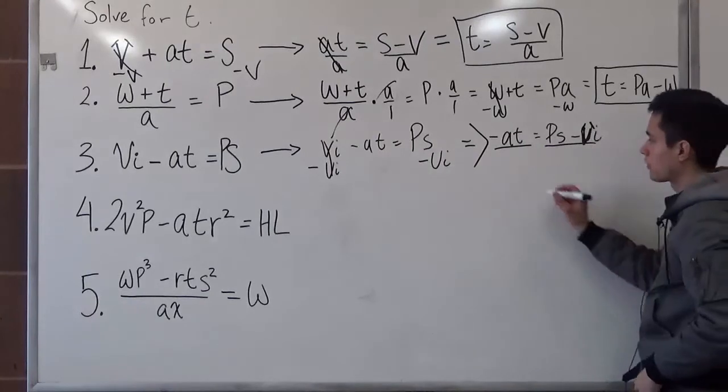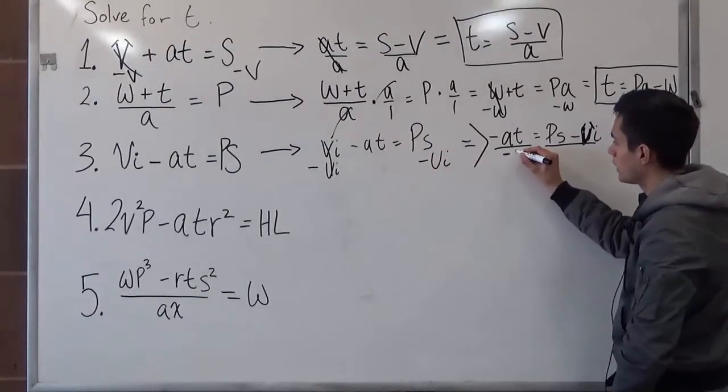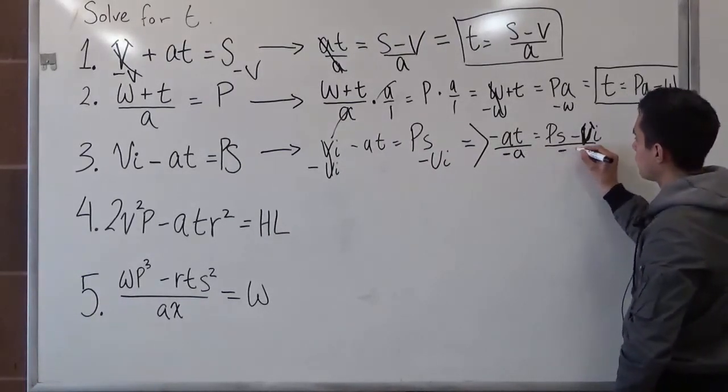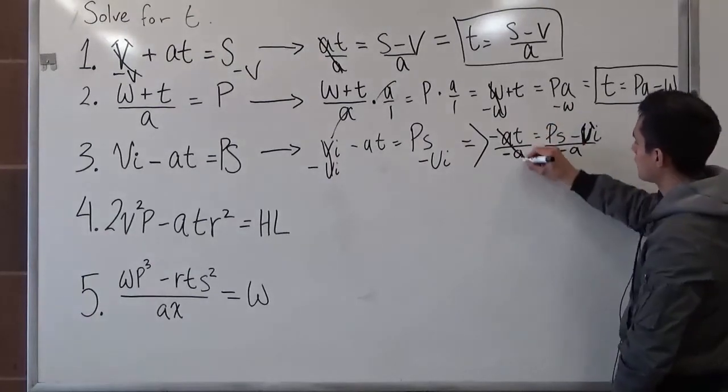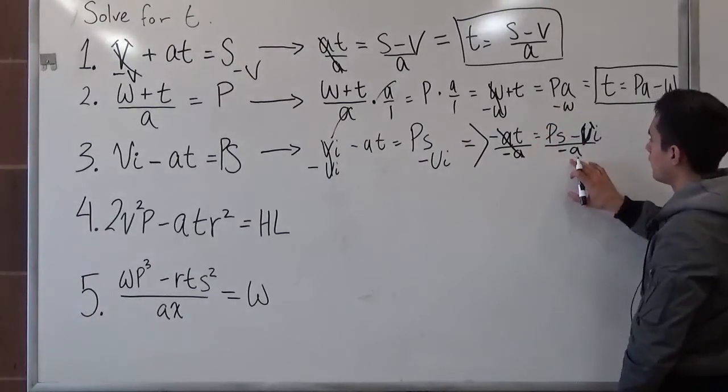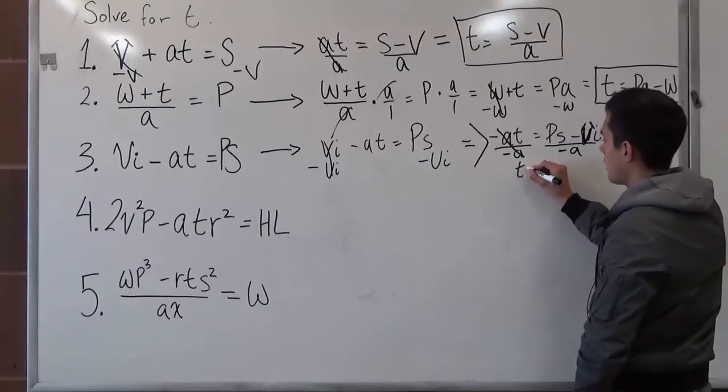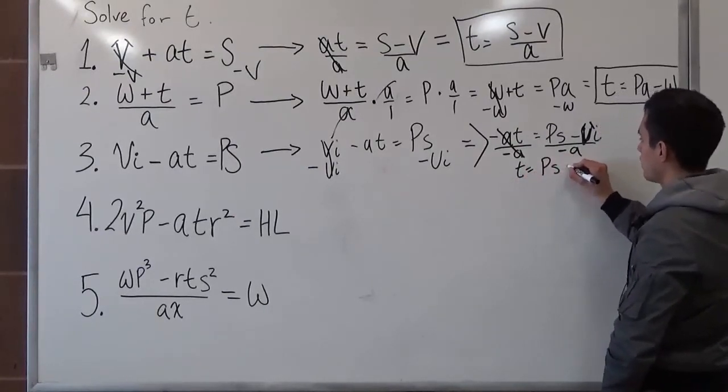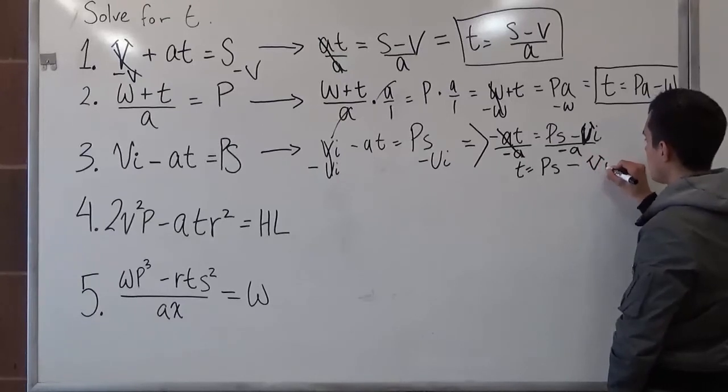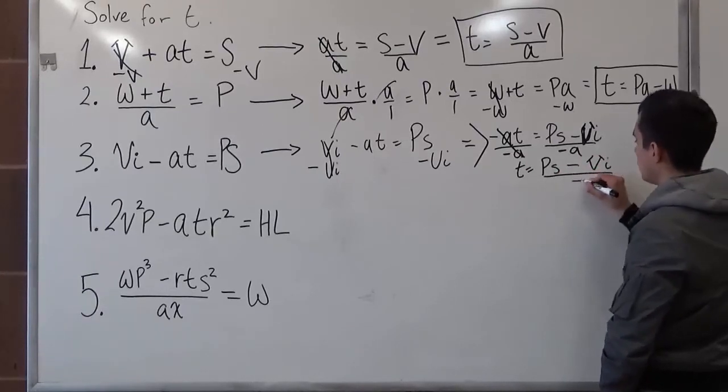So always remember that rule. So we can divide it by negative a, divided by negative a, and this cancels out, and the negative a stays at the bottom here. So now we do have our t is equal to p s minus v i over negative a.